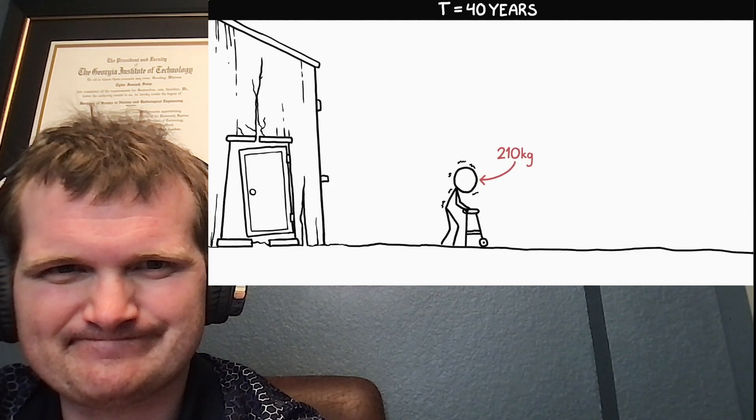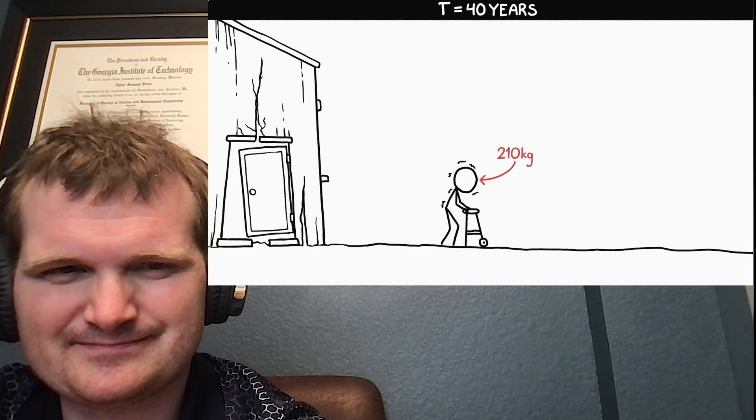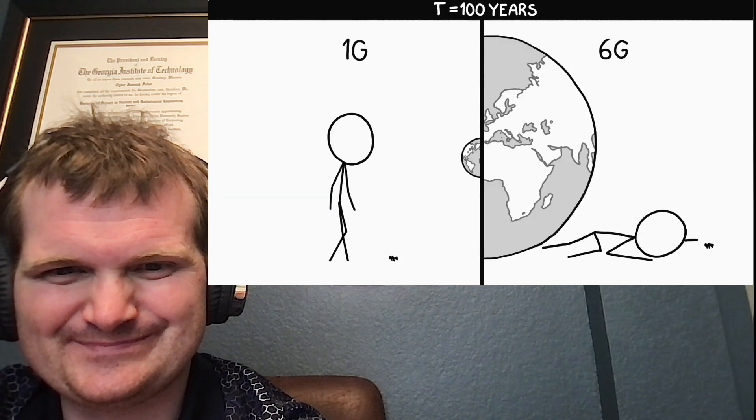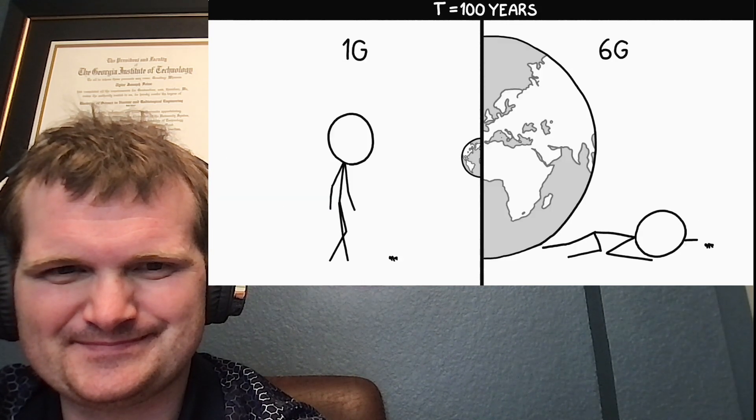At this point, even the strongest humans would be able to walk only with very great difficulty. Breathing the thick air would be a challenge. Trees would collapse, and crops wouldn't stand up under their own weight. After a hundred years, we'd be experiencing over six G's of gravity.